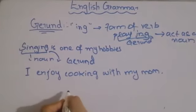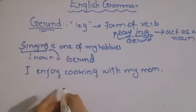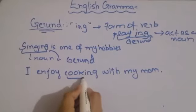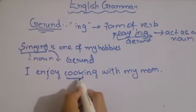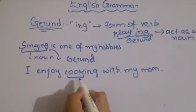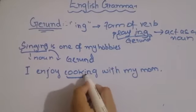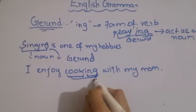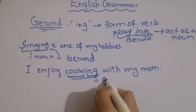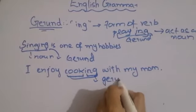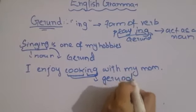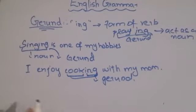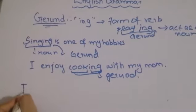Now we will use 'cooking' as a noun. 'Cook' is the base form of the verb. We add -ing to get 'cooking', which acts as a noun — this is the Gerund. Now let's move on to Infinitive.